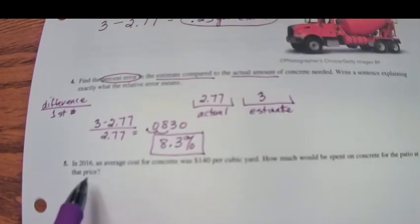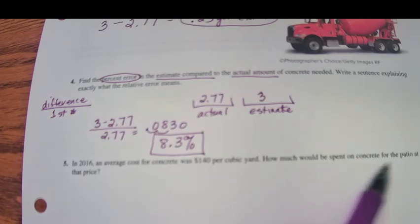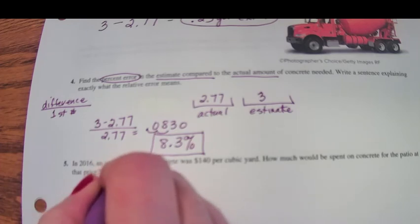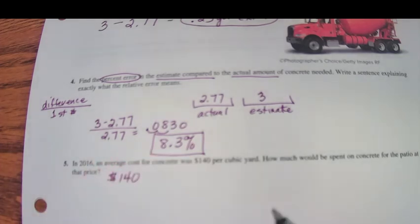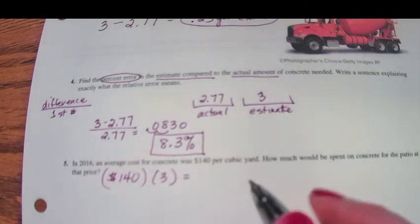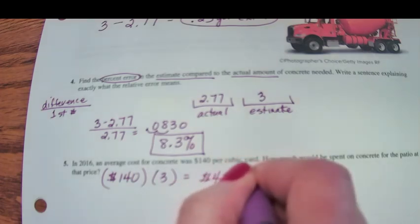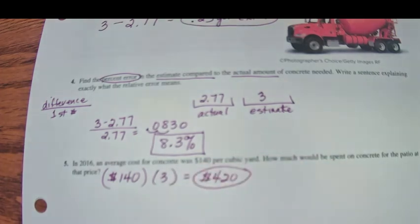Now in 2016, an average cost for concrete was $140 per cubic yard. How much would be spent for this patio? $140 for every cubic yard, and we ordered 3 cubic yards, 3 times 140. So we paid, or they paid, $420 for their 3 cubic yards.